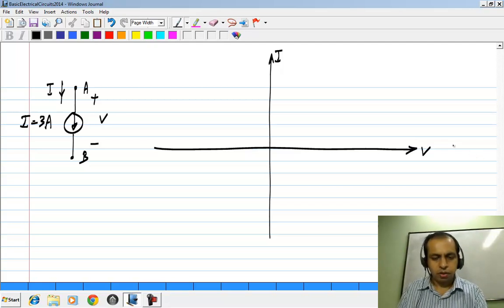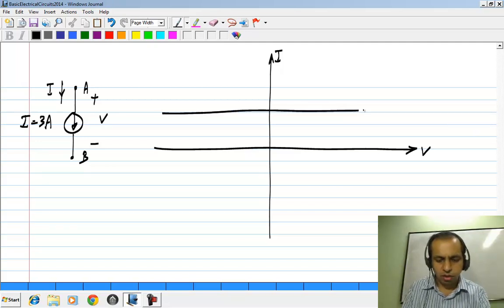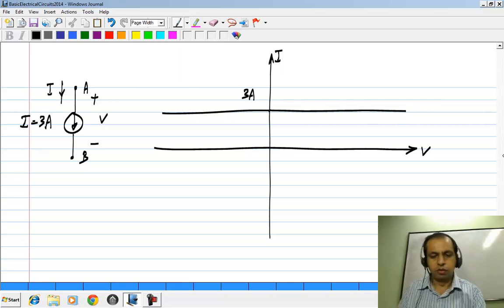It maintains a current regardless of the voltage, so the characteristic is a horizontal line when drawn on the I-V plane. It maintains 3 amperes regardless of what voltage is across it.